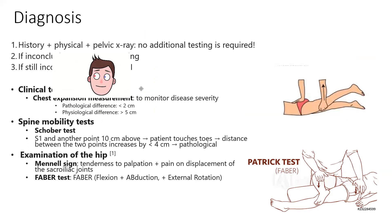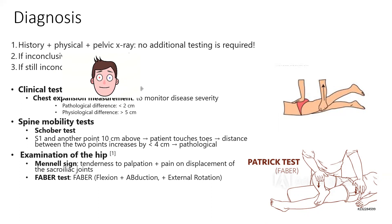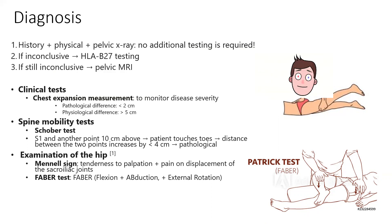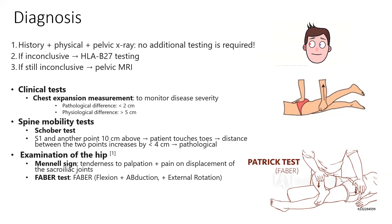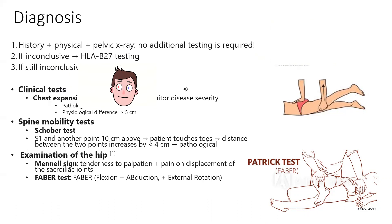For diagnosing AS, the main strategy is through history, physical exam, and a pelvic X-ray. X-rays are your best friend with this disease as they're also used to monitor disease progression — generally every three months to see how badly the joints are affected. Note that X-ray changes may only appear in later stages, so early disease might be missed.